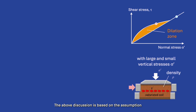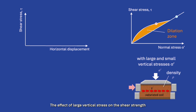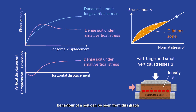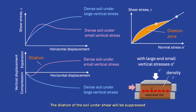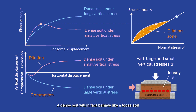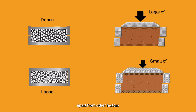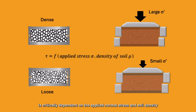The above discussion is based on the assumption that the applied normal stress is not very large. The effect of large vertical stress on the shear strength behavior of the soil can be seen from the graph — the dilation of the soil under shear will be suppressed, and a dense soil will in fact behave like a loose soil under a high stress state. We can therefore conclude that the shear strength of a soil is critically dependent on the applied normal stress and soil density.